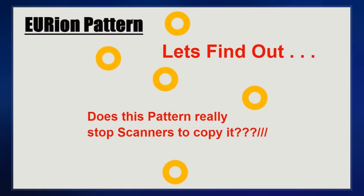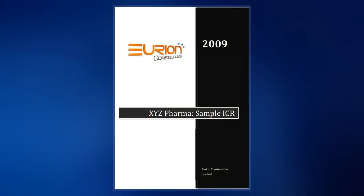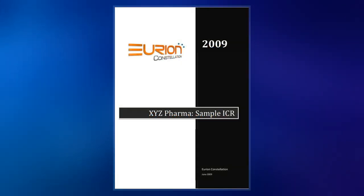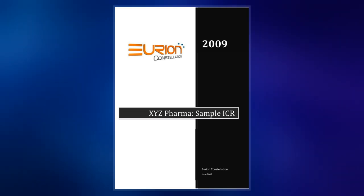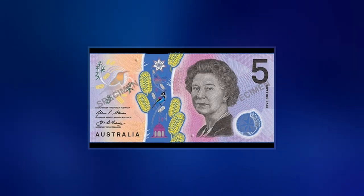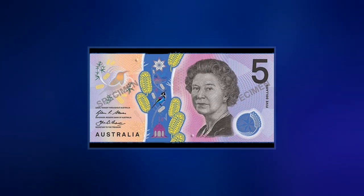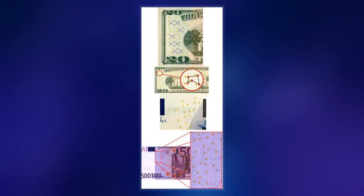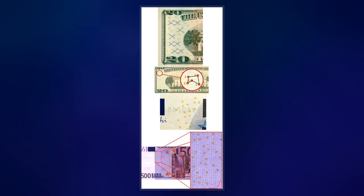Kuhn named it the Eurion Constellation as it resembled the astronomical Orion Constellation, and Euros is the ISO 4217 designation of the euro currency. The Eurion Constellation first described by Kuhn consists of a pattern of five small yellow, green or orange circles which is repeated across areas of the banknote at different orientations.